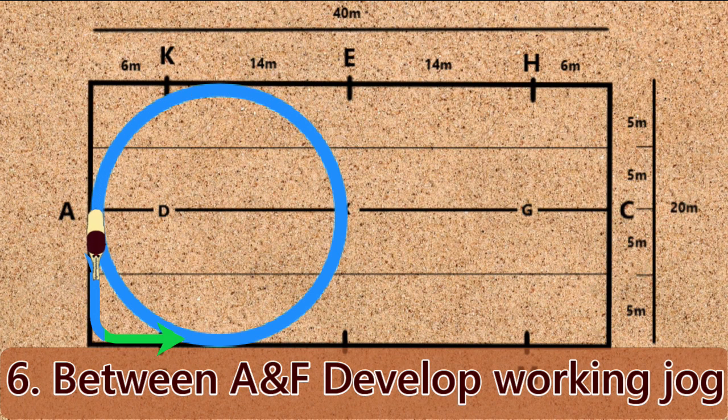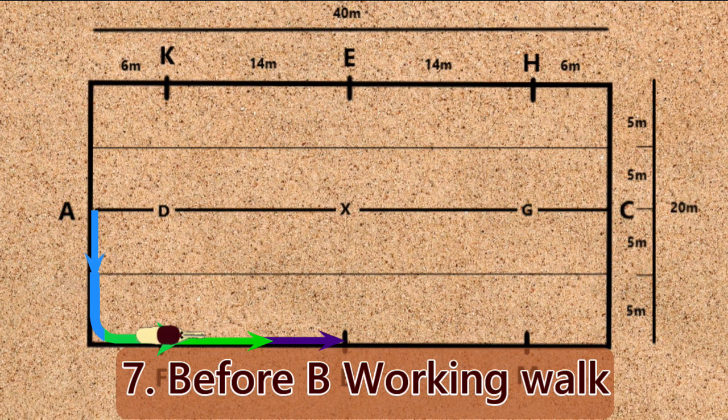Movement 6: Between A and F, develop working jog. Movement 7: Before B, working walk.